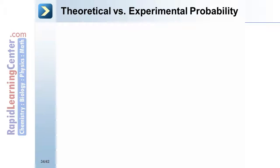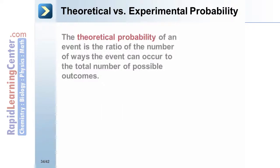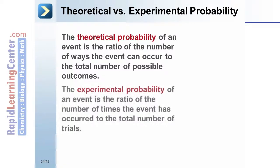Theoretical vs. Experimental Probability. The theoretical probability of an event is the ratio of the number of ways the event can occur to the total number of possible outcomes. The experimental probability of an event is the ratio of the number of times the event has occurred to the total number of trials.